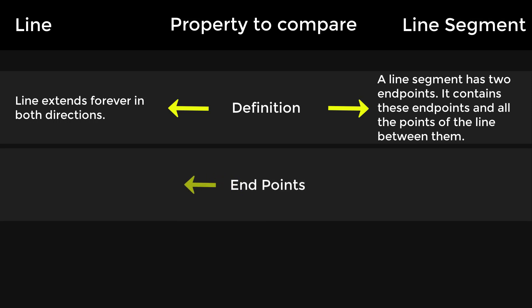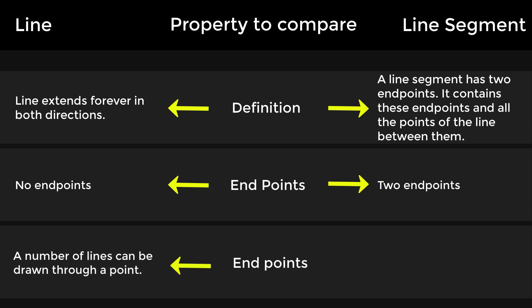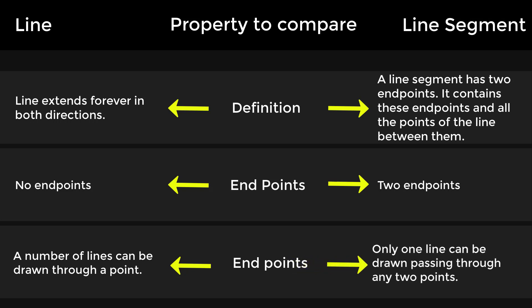Endpoints of a line: no endpoints. Endpoints of a line segment: two endpoints. On a line, a number of lines can be drawn through a point. On a line segment, only one line can be drawn passing through any two points.